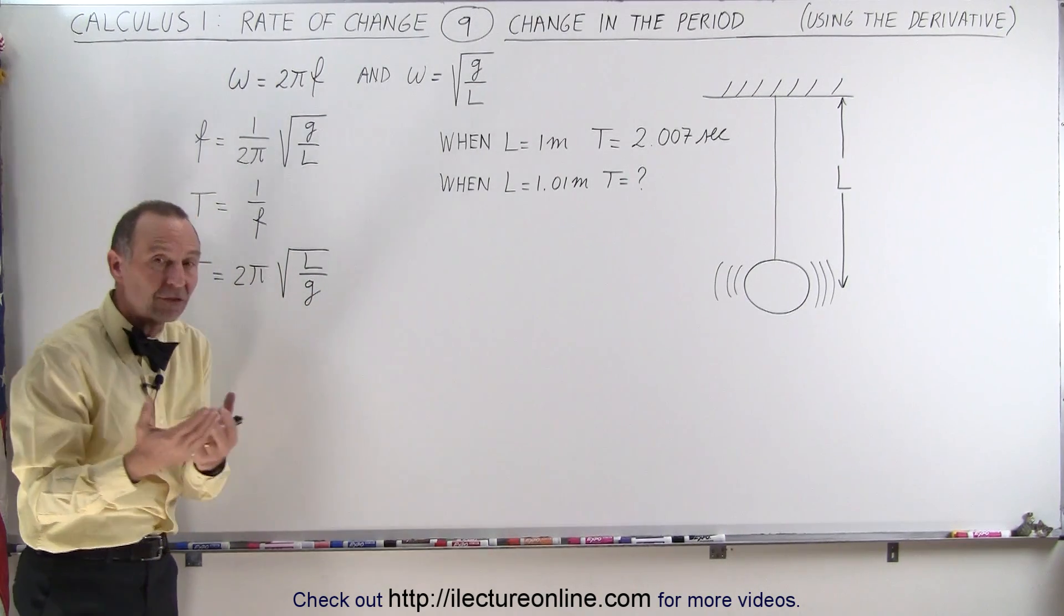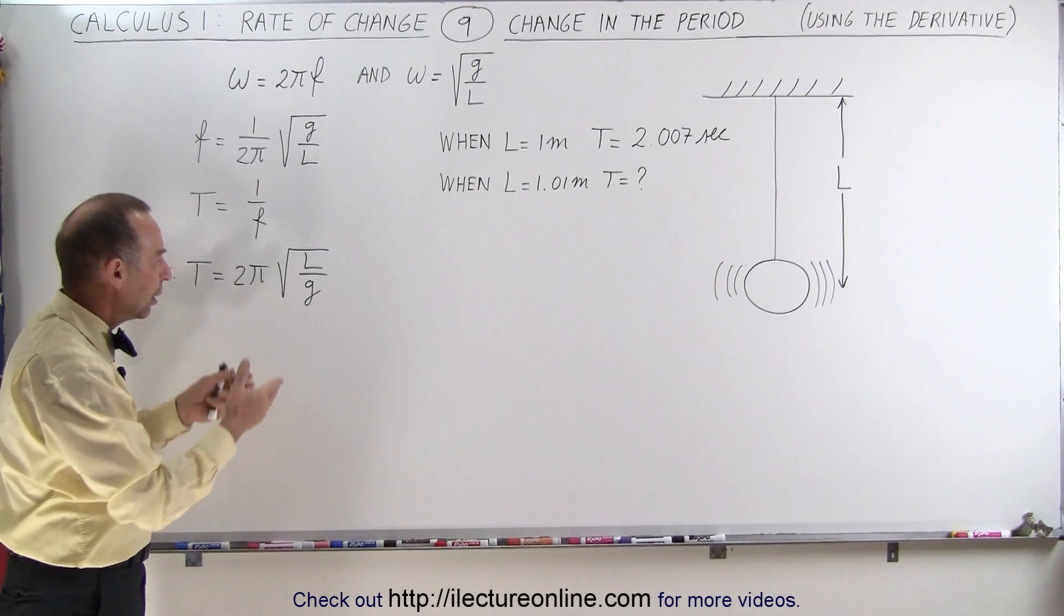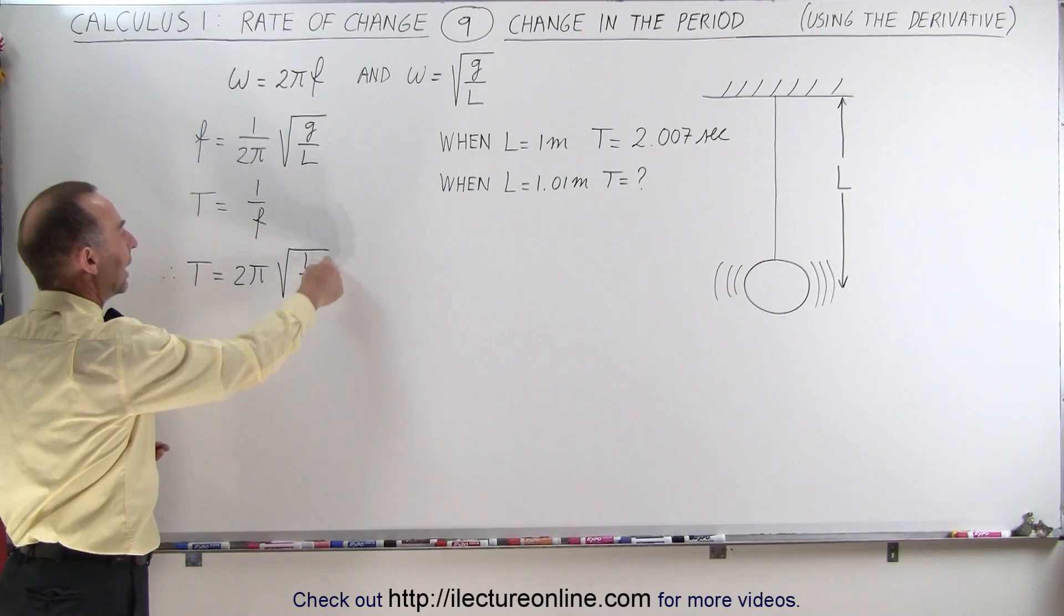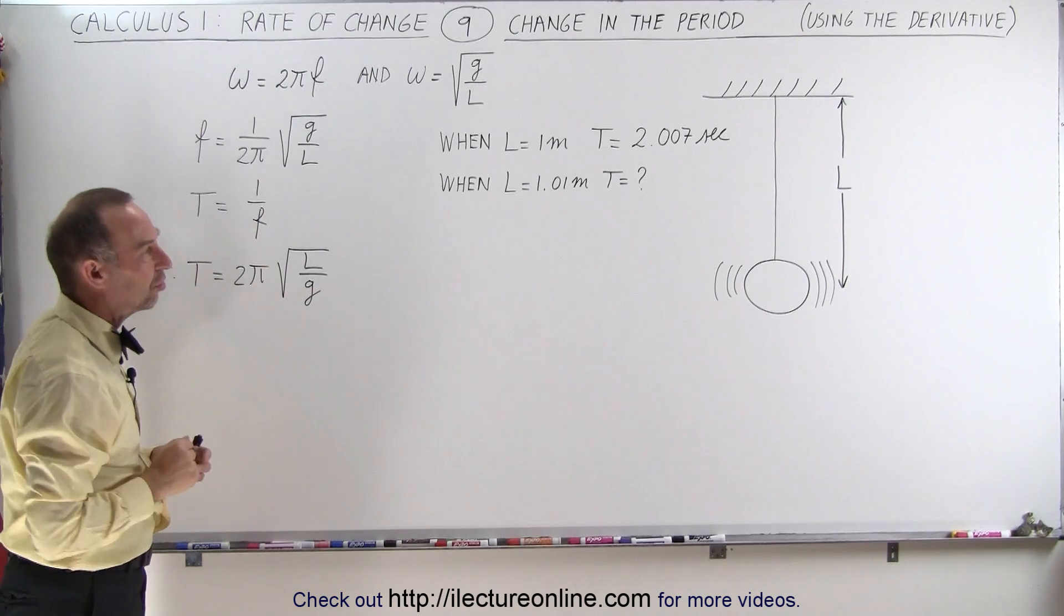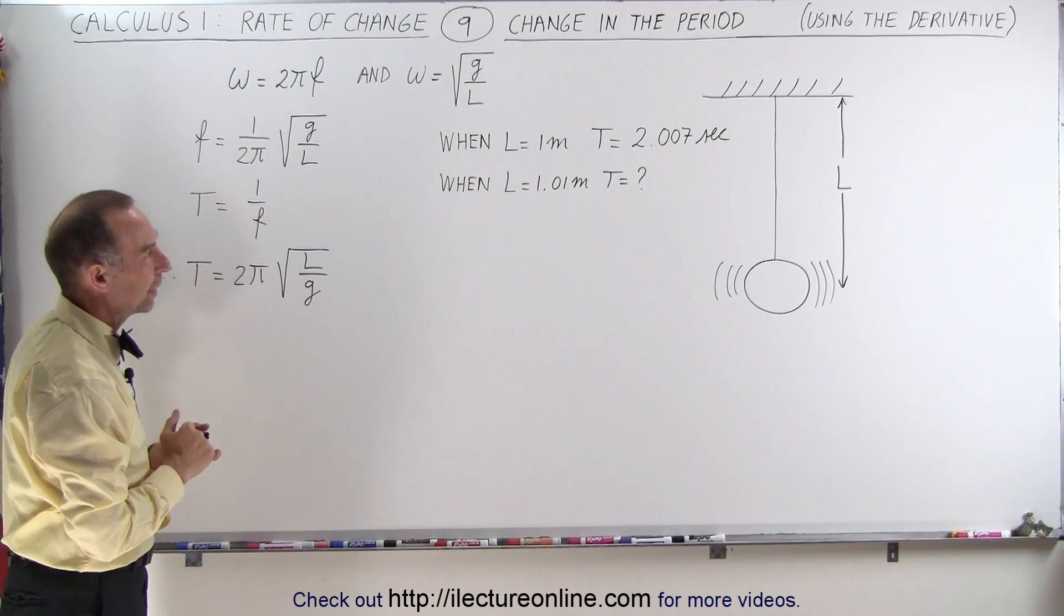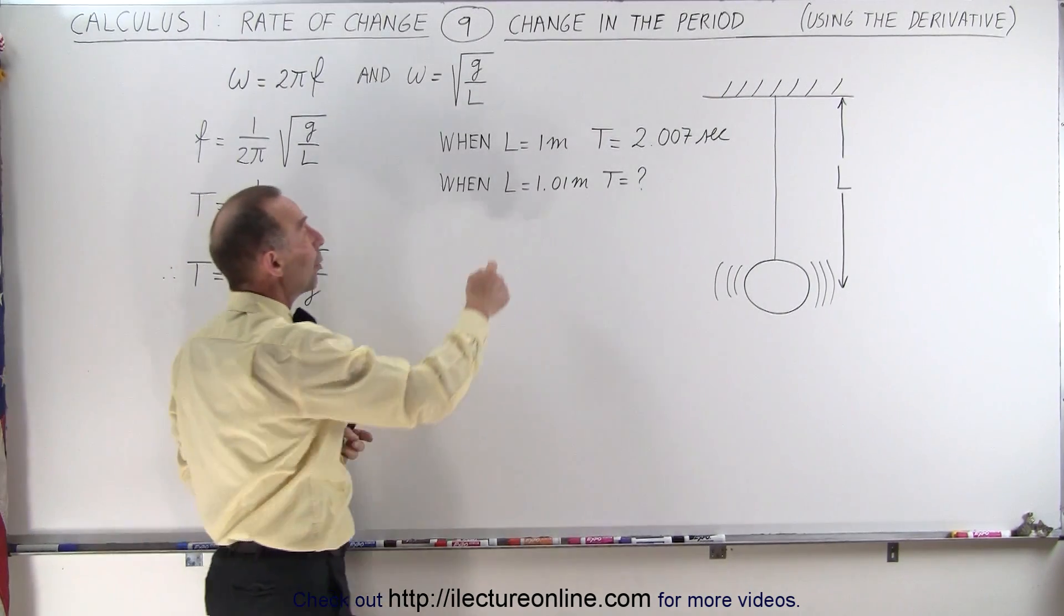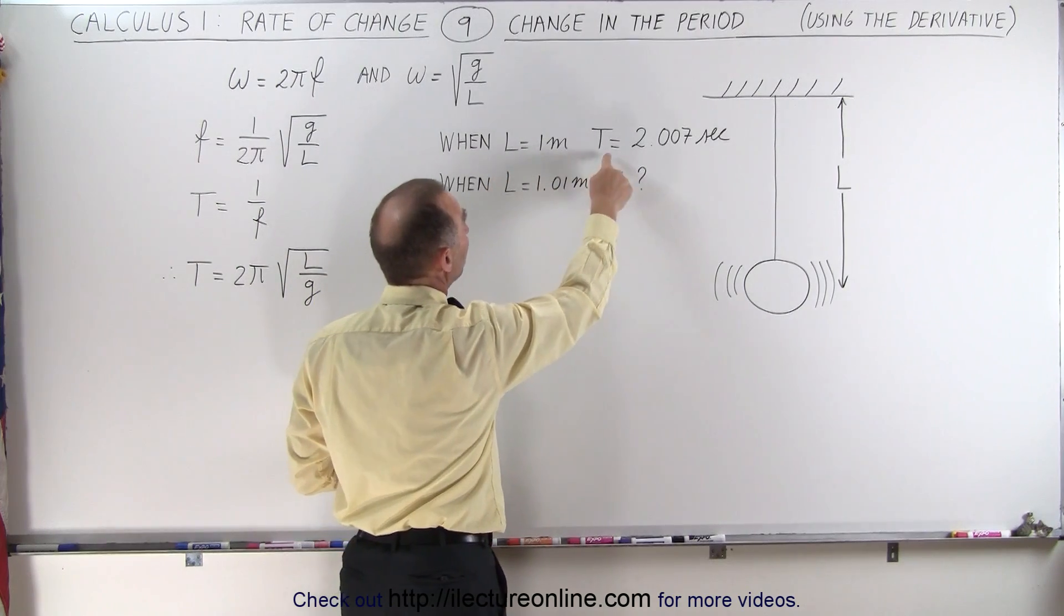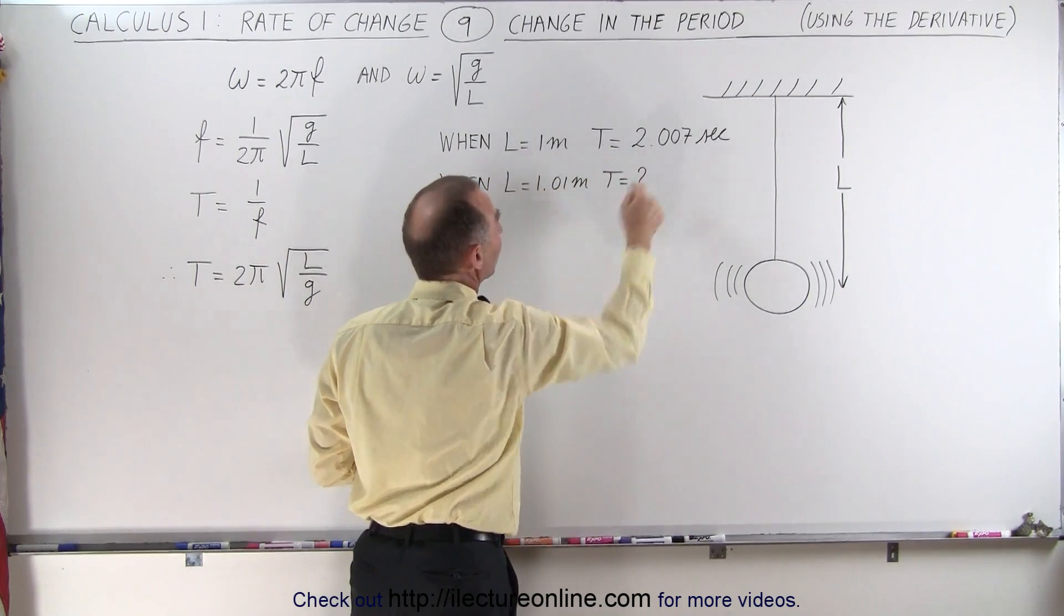Now g of course will be a constant, that's the acceleration of gravity at a particular location on the earth, and L is the only variable. It will be the length of the pendulum to the center of mass of that pendulum. And I've already calculated that when the length is equal to 1 meter, the period will be 2.007 seconds.